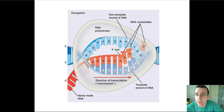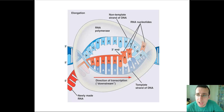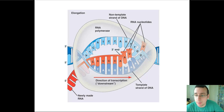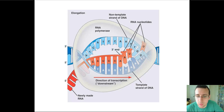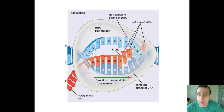RNA polymerase type 1 is basically in charge of making ribosomal RNA. Type 2 will make precursor mRNA — the actual genetic message which codes for proteins — as well as small nuclear RNAs and microRNAs. RNA polymerase type 3 will make ribosomal RNA of a special type, the 5S ribosomal RNA, as well as many of the transfer RNAs and other small RNA products. There are different classes — class 1, 2, and 3 — for those respective roles. Finally, RNA polymerase type 4 is in charge of making small interfering RNA, which has everything to do with gene expression control.